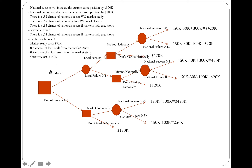Depending on what path you take to each branch, you end up determining how much cost or profit you're going to have in the end. For example, if you test the market, you pay $30,000, and your current asset is $150,000. If you test the market and do not market nationally, you end up with $150,000 minus $30,000, which gives you $120,000. If you go from the upper branch — test the market and are nationally successful — you have $150,000 plus $300,000 minus $30,000.